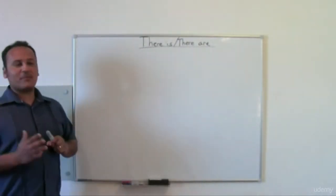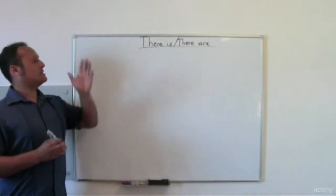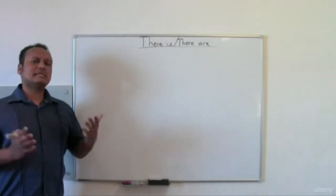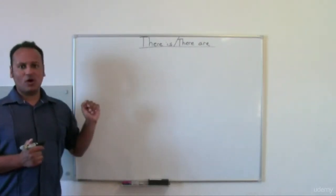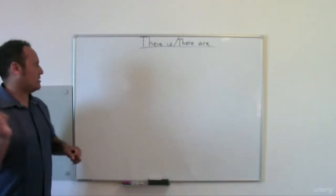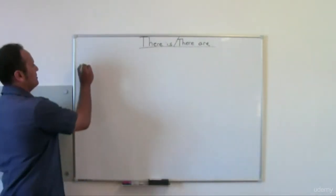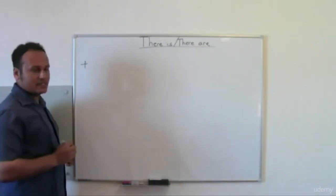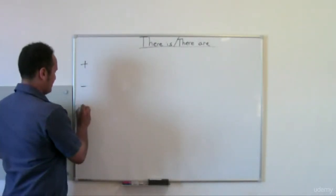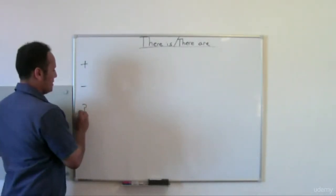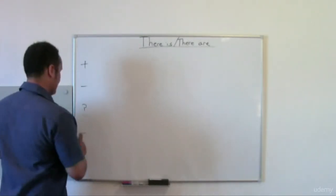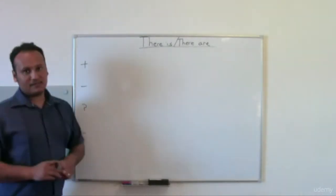So we are going to separate between 'there is' and 'there are'. What is the difference? When do we use one, and when do we use the other? Let's set it up like this: positive, negative, question, and at the end, the answer.